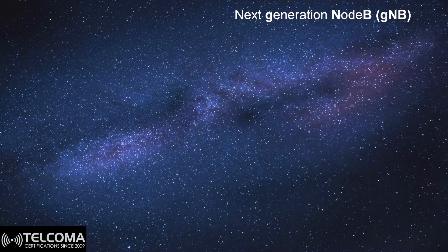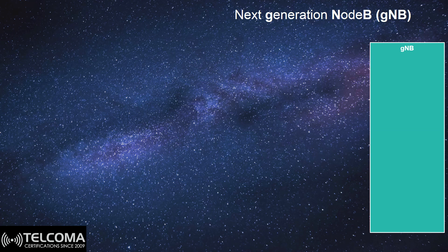Today we will talk about the next generation Node B, or the gNodeB in 5G. 3GPP Release 15 has introduced a new concept of the gNodeB and Nokia is very vocal about introducing these solutions. The gNodeB is somehow divided into two or three entities, as compared to what we have seen in 4G, where the eNodeB was just a single entity.